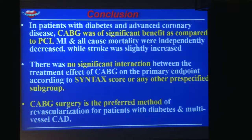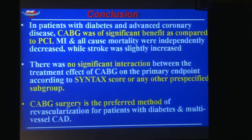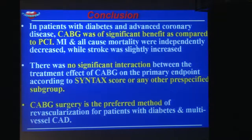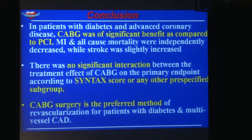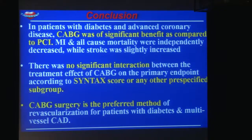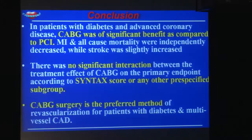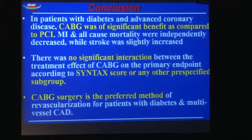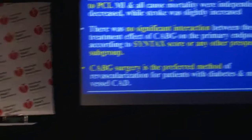In conclusion, in patients with diabetes and multivessel coronary artery disease, CABG provided significant benefit compared to PCI. MI and all-cause mortality were independently decreased, while stroke was slightly increased. There was no significant interaction between the treatment effect of CABG on the primary endpoint according to SYNTAX score or any other pre-specified subgroup. CABG surgery is the preferred method of revascularization for patients with diabetes and multivessel disease.